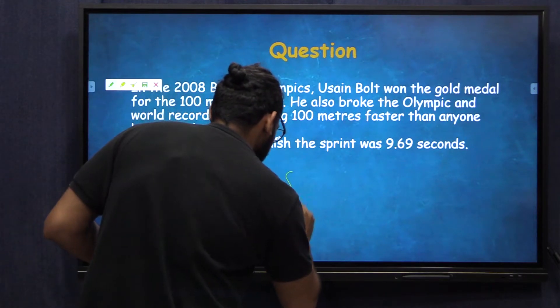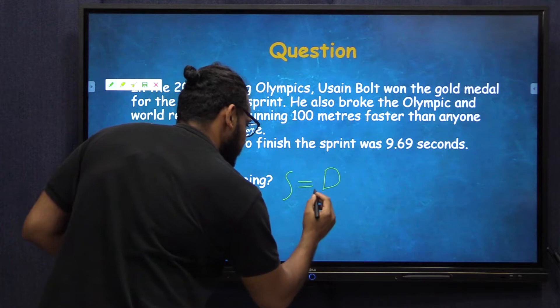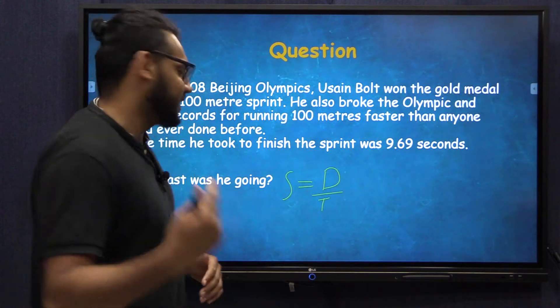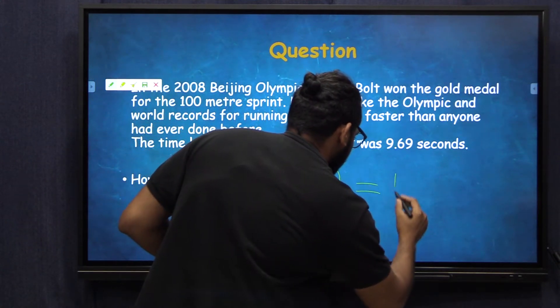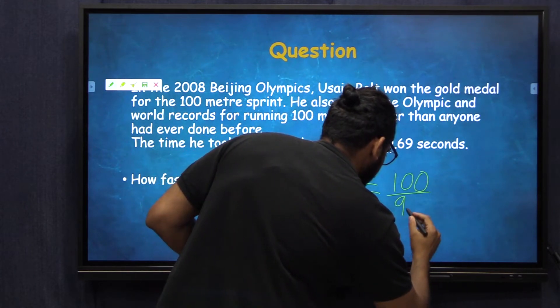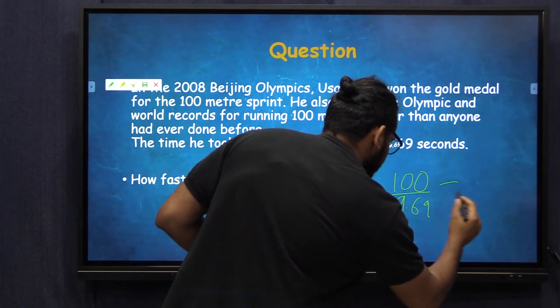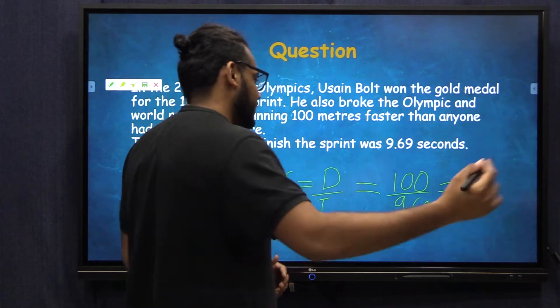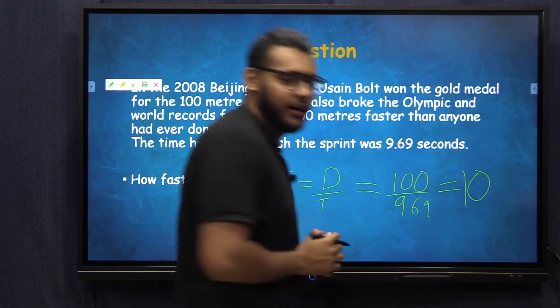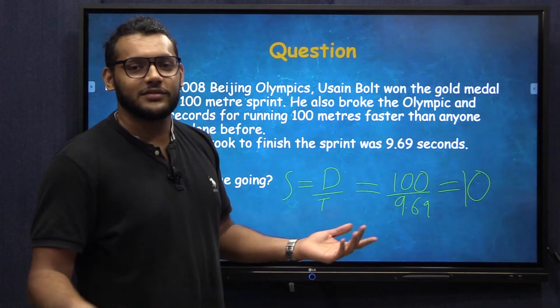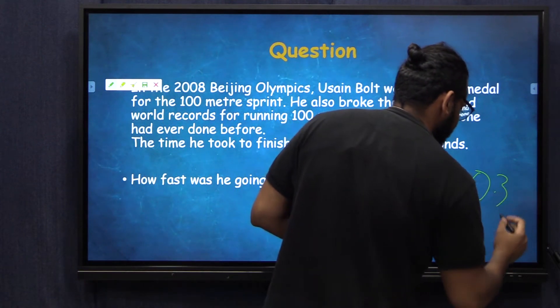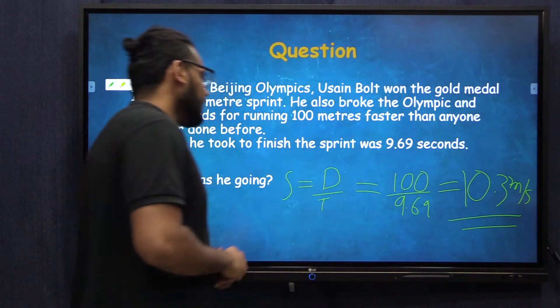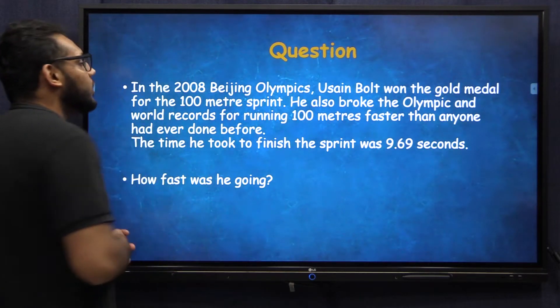Let's do that problem here. We know that speed is equal to distance divided by time. Now what is the distance? That's 100 meters. The time is 9.69 seconds. That is 100 divided by 9.69. What is this answer? I want you to take a calculator and look it up and tell me the answer. It is 10.3 meters per second. Now we know the speed of Usain Bolt in his Olympic gold medal race.